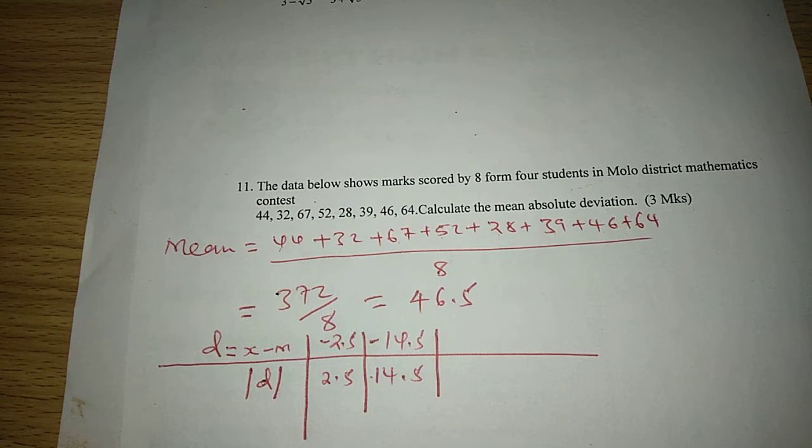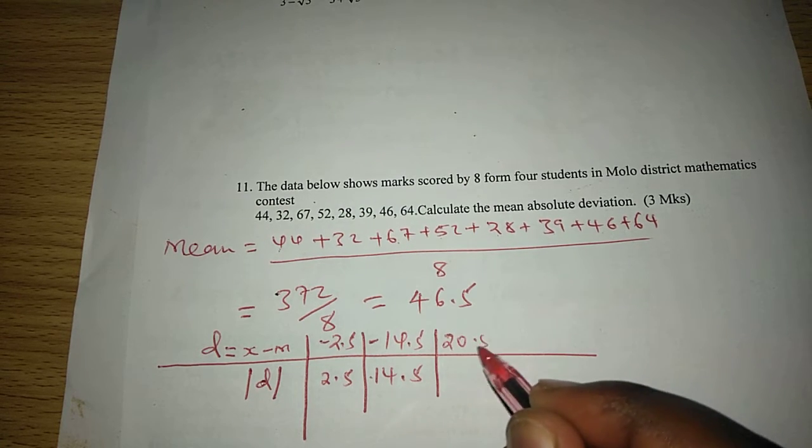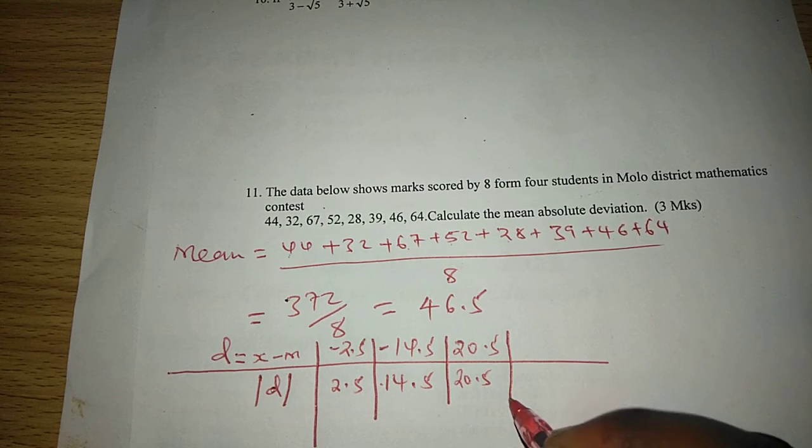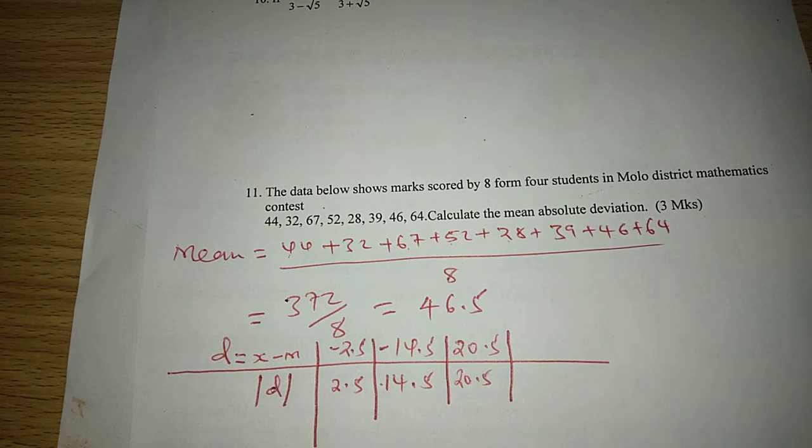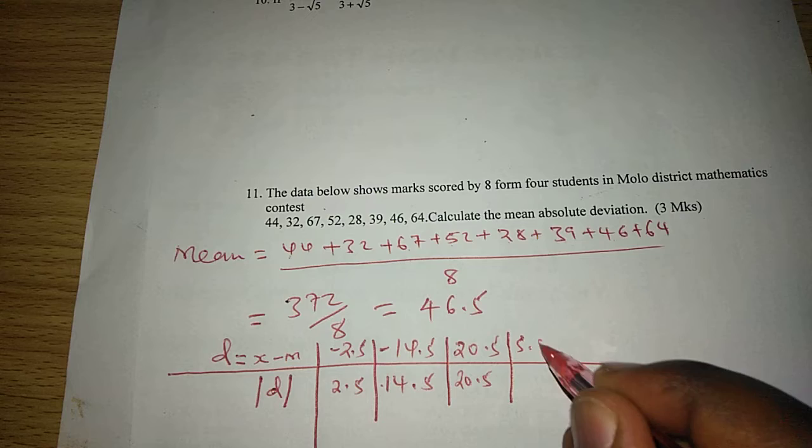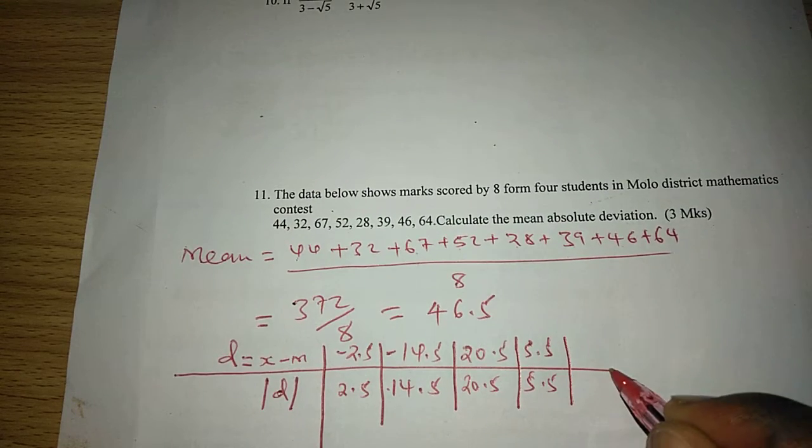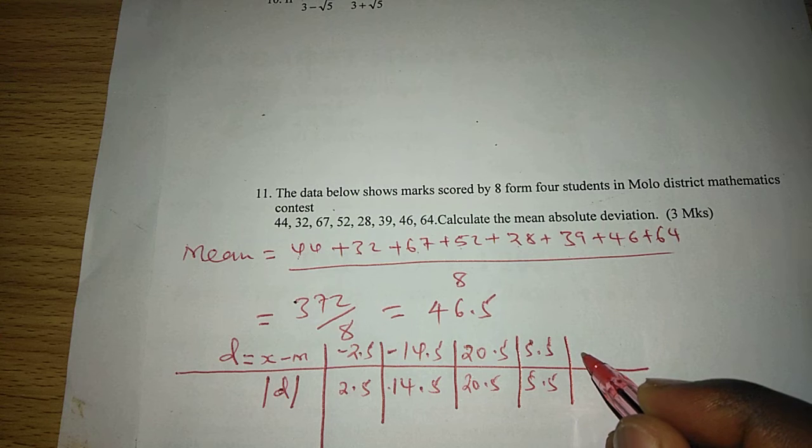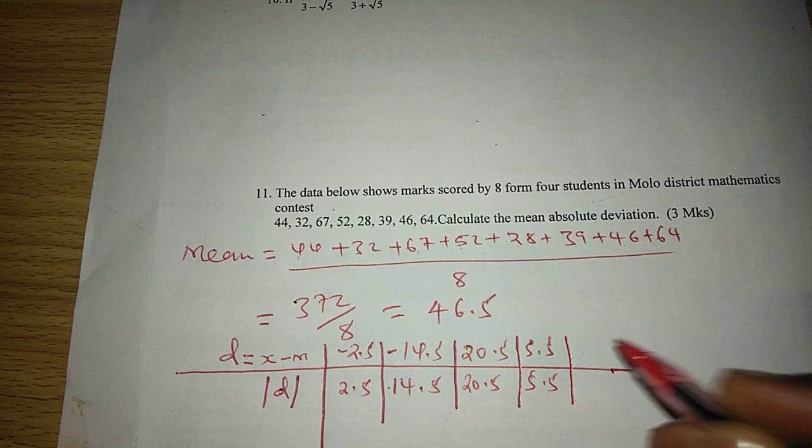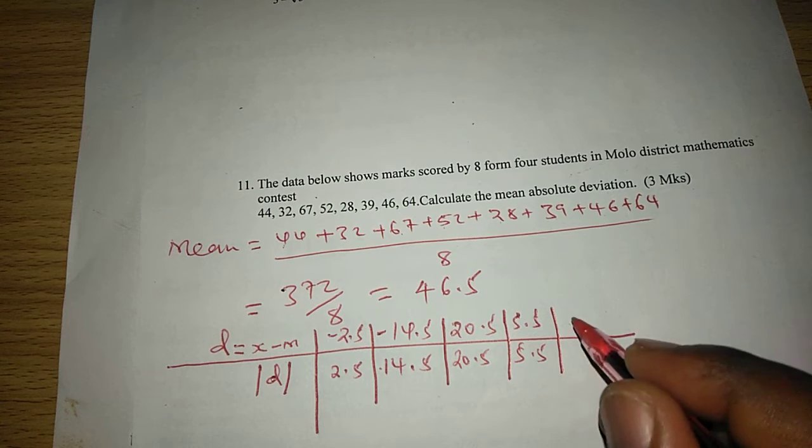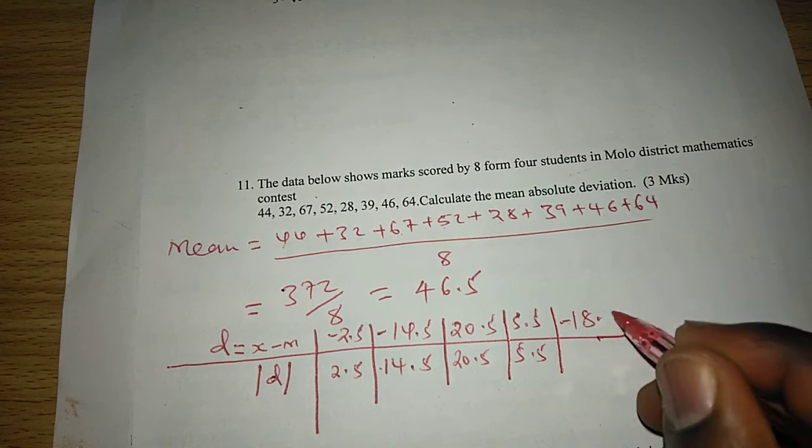The next value, 52 minus 46.5, we get 5.5. The next value after 52, we go to 28 minus 46.5. We get negative 18.5.